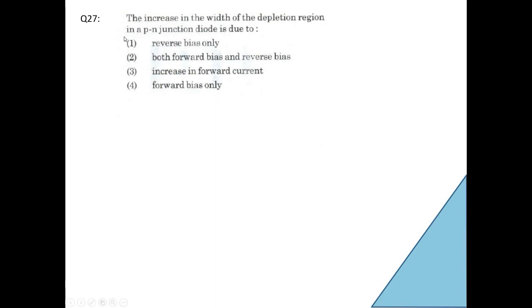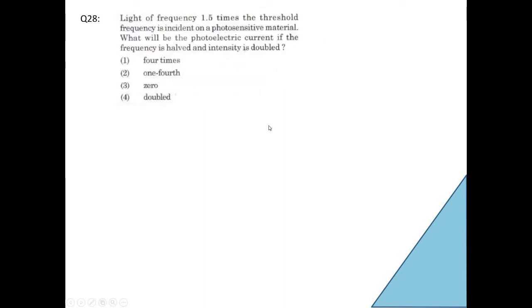Go to the next one. The increase in the width of the depletion region in a PN junction diode is due to: option 1, reverse bias only; option 2, both forward bias and reverse bias; option 3, increase in forward current; option 4, forward bias only. From your theory you will know that reverse bias only is the correct answer.